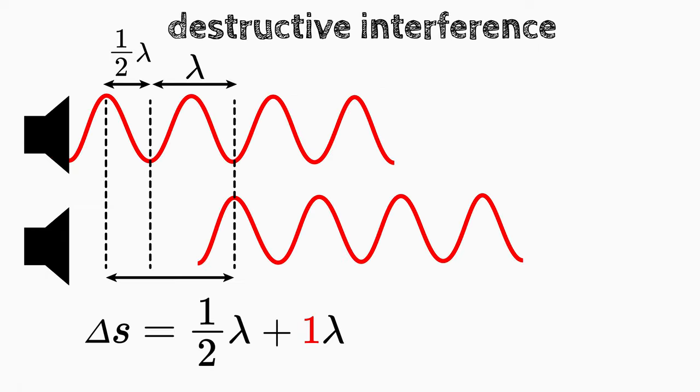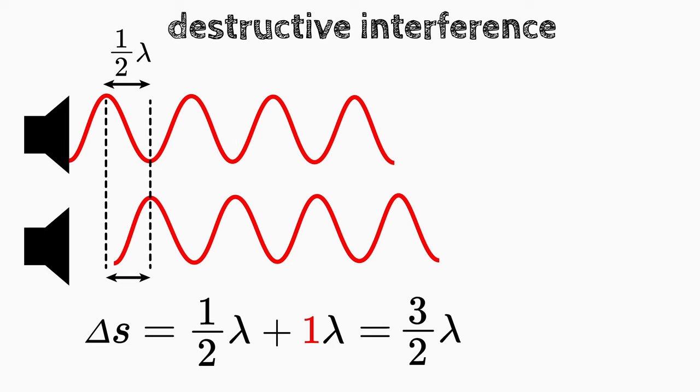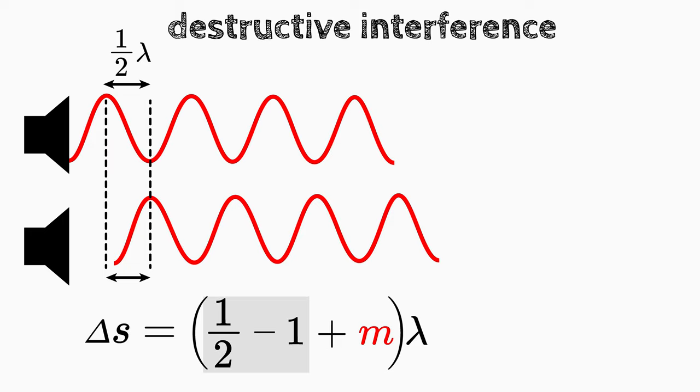The path difference delta s of the first order fringe would be then three halves of the wavelength. But this should be one half of the wavelength. To correct this, we rewrite the relation by subtracting 1 and at the same time adding 1 to m.